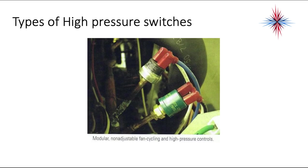This is an example of a high and a low pressure switch next to each other. One will be wired and piped to the low side, the other will be piped to the high side. They're normally wired in series with each other because both switches have to be closed for the compressor to run.